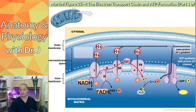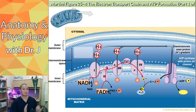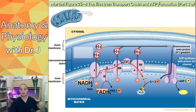As NADH and FADH2 contribute their electrons, protons are moved from the matrix into the space between the two membranes — called the intermembrane space. This intermembrane space becomes one of the most acidic parts of the cell, because protons are acids. It becomes very positively charged and very acidic. We need energy from the electrons to build up this store of protons.